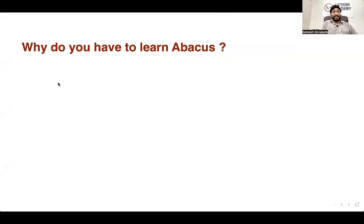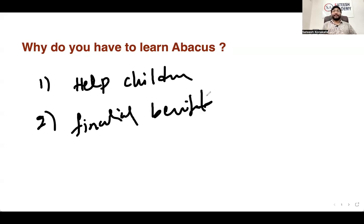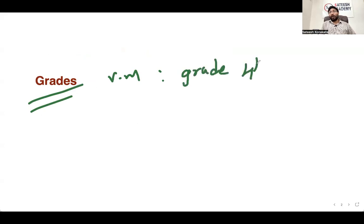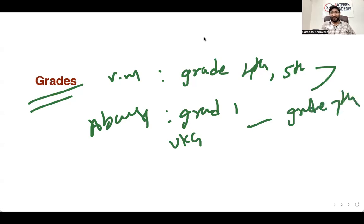There are two main benefits. First benefit is to help children, and the second benefit is financial benefits. When it comes to helping children, if you look at grades — Vedic Maths is for grade 4th or 5th and above, whereas Abacus is for grade 1 or UKG up to grade 7th. I prefer Abacus up to grade 5th.